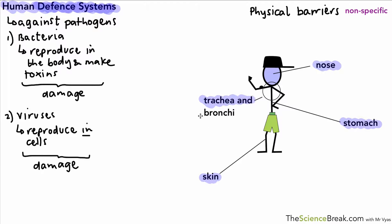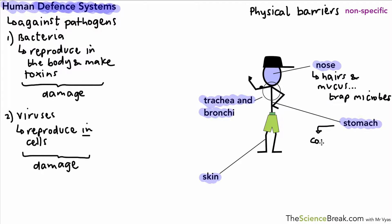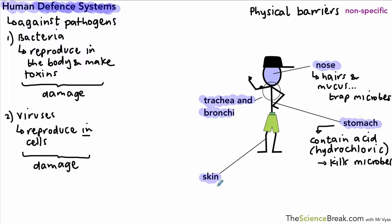How does the nose defend against entry of pathogens? On the inside of the nose there are hairs, and there is also a substance called mucus that's produced. The hairs can trap pathogens, dust, and combined with the mucus, stop things from getting in. Sniffing basically removes microbes to the back of your throat where they can be swallowed into the stomach, which contains hydrochloric acid at about pH 2, and that will kill the microbes.